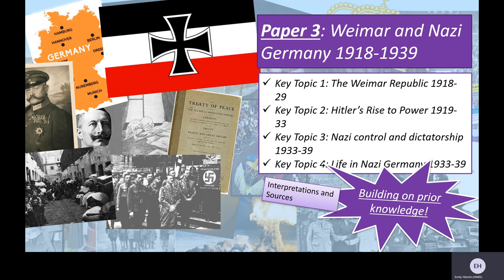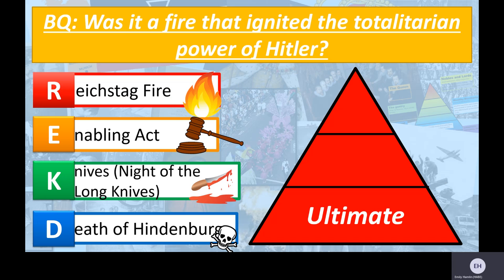To give you a flavour of some of the things and skills you would practise in history, here's an example from one of our Year 10 lessons. You'll study Paper 3 in the second part of Year 10. The title was: 'Was it a fire that ignited the totalitarian power of Hitler?' Students had to rank what they felt was the key reason for Hitler becoming Führer in 1934. One way we embed our knowledge in history is by coming up with acronyms. We have 'WREKD' — so Hitler became Führer and wrecked Germany.